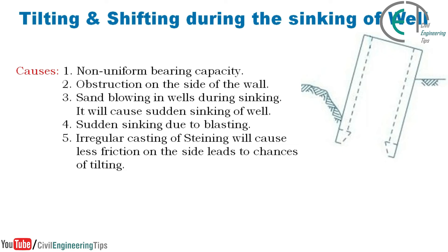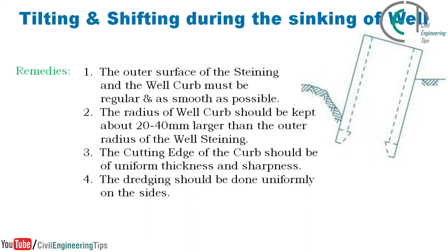Tilting and shifting may happen during the sinking of the well. The causes include non-uniform bearing capacity, obstruction on the side of the wall, sand blowing in wells during sinking — which causes sudden sinking — sudden sinking due to blasting, and irregular casting of steining, which causes less friction on the side and increases chances of tilting.